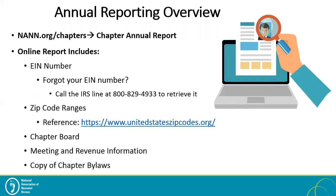Also on the annual report online form, we ask for your updated chapter board information. Without this updated chapter board roster, NAN is not able to communicate with your leadership on important updates and information affecting your chapters. In order to receive chapter rosters and new chapter leadership resources, we really need updated information on file. The chapter annual report online form will also request meeting and revenue information and a copy of your bylaws. In addition to the online form, we require a confirmation notification after filing your 990 tax return.